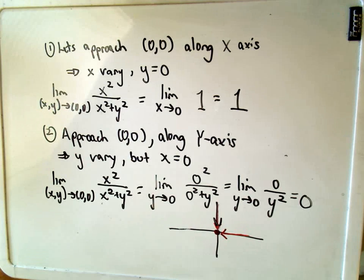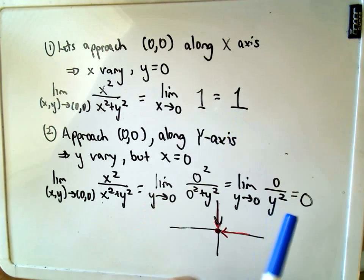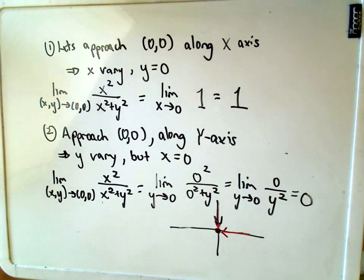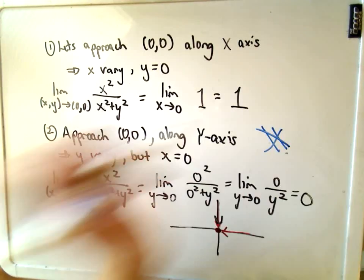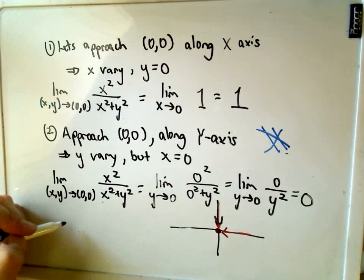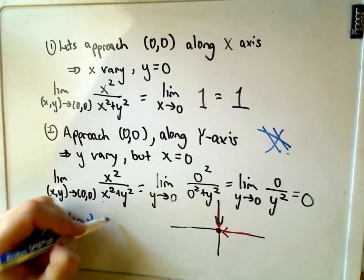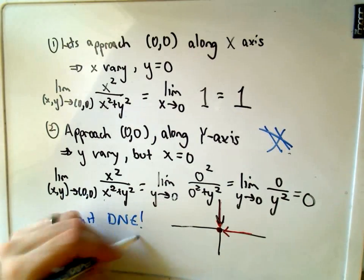So what we've justified now is that this limit does not exist. We've approached from two different directions, so similar to first semester calculus, and we've shown that the limit from one direction is not equal to the limit from another direction. So since the limits are not equal, we can immediately conclude that the limit does not exist.